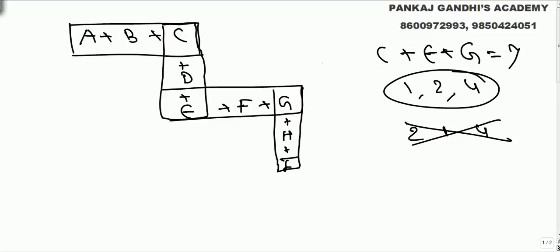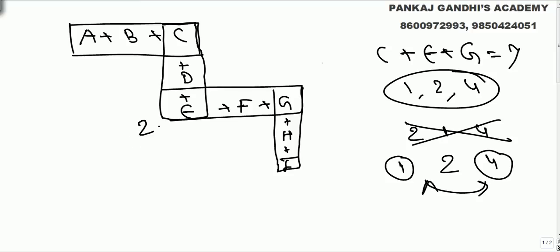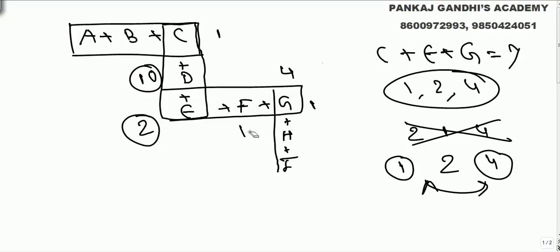Let's try E equals 2. Then C and G must be 1 and 4 in some order. But again, if C is 1, D would need to be 10 for CDE to sum to 13, which is not possible. So E cannot be 2 either.